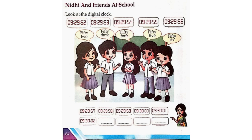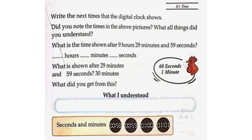9:32, 9:33, 9:34, 9:35, 9:36. Write the next times that the digital clock shows. Did you note the times in the above pictures? What is the time shown after 9 hours 29 minutes and 59 seconds? 9 hours 30 minutes 0 seconds.